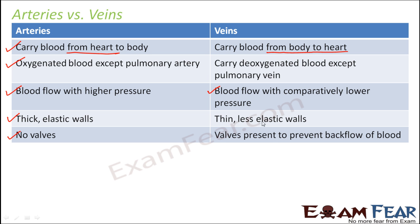Veins carry deoxygenated blood containing carbon dioxide, which is not desired by the cells. It is therefore important to prevent backflow of deoxygenated blood, and that is why valves are present in veins. These are the key differences between arteries and veins.